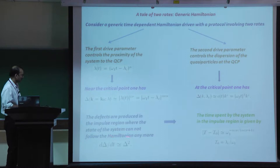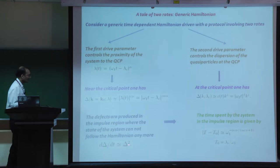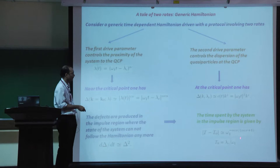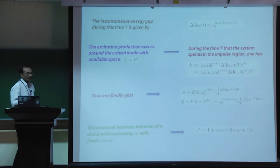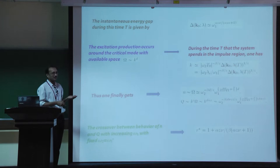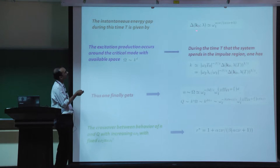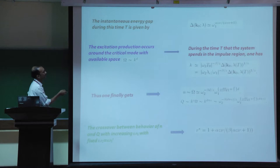Applying the Landau criterion again, defects are produced in the impulse region where d(delta)/dt ~ delta^2. Substituting the expression for delta and solving as in the old Kibble-Zurek argument, the time spent by the system at the critical point is determined. Substituting back, the energy gap delta scales as omega_1^(alpha*z*nu/(alpha*z*nu+1)), which is the standard Kibble-Zurek result for alpha=1 (linear drive), easily generalized to nonlinear drives.